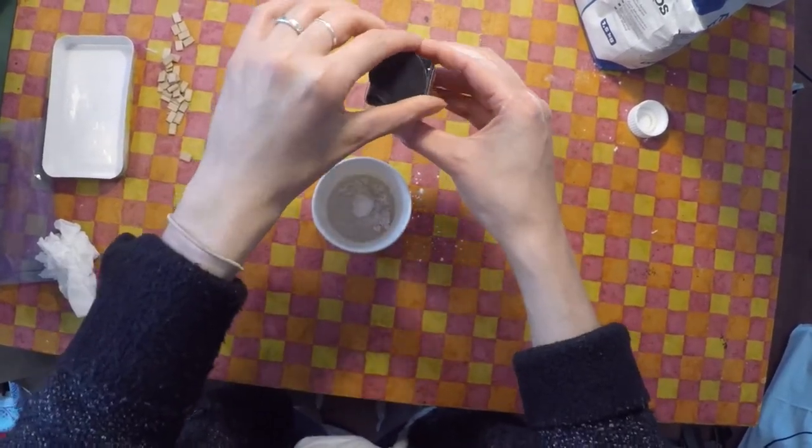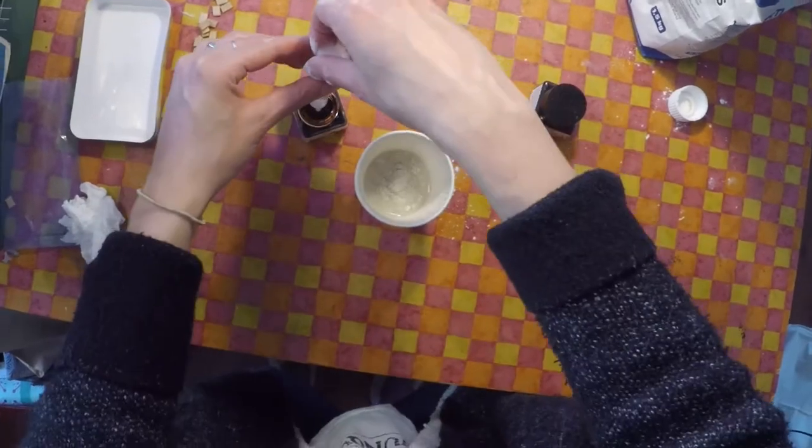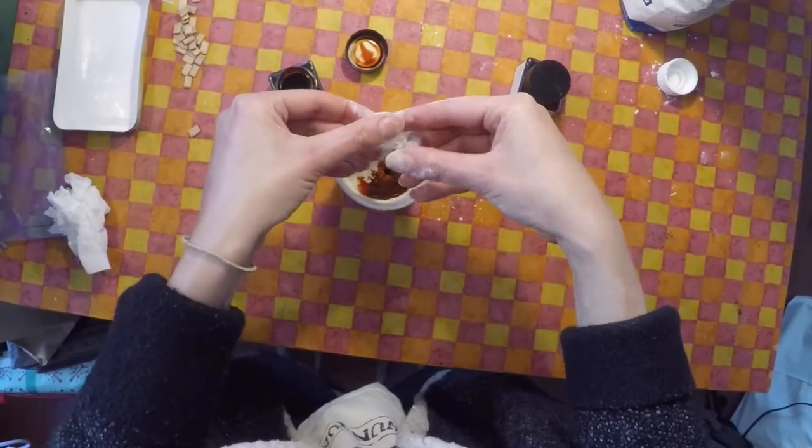Take a cup with a bit of water in it and start adding scoops of plaster. Your mixture is good to go when a small island of dry plaster forms in the water.